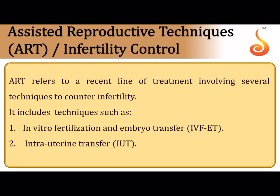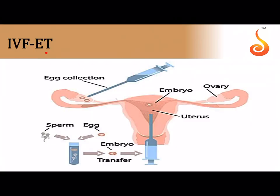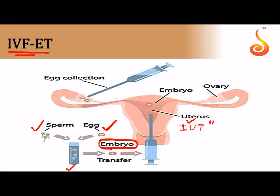Infertility — where a couple is unable to conceive despite two years of unprotected cohabitation — can be addressed through Assisted Reproductive Technology (ART). The first ART technique is the test-tube baby technique (IVF-ET: In Vitro Fertilization and Embryo Transfer). In this technique, the egg is collected from the donor or wife, the husband's sperm is collected, and both are introduced into a lab dish (in vitro — vitrum means glass). The zygote is allowed to develop into an embryo; if the embryo has more than eight cells it is transferred directly into the uterus (intrauterine transfer), and if it has fewer than eight cells it is introduced into the fallopian tube.